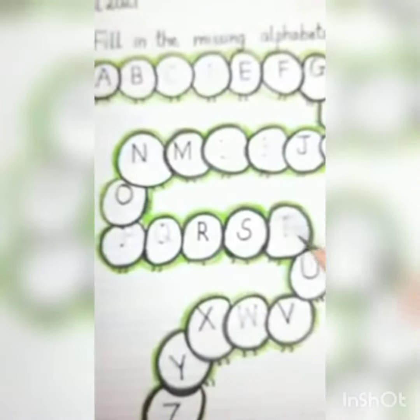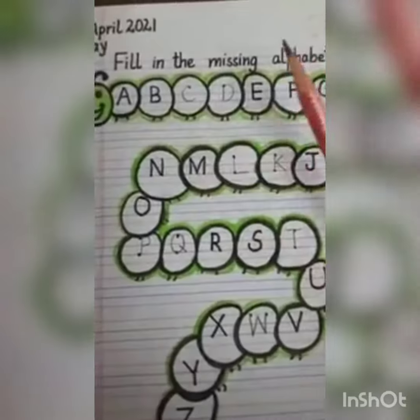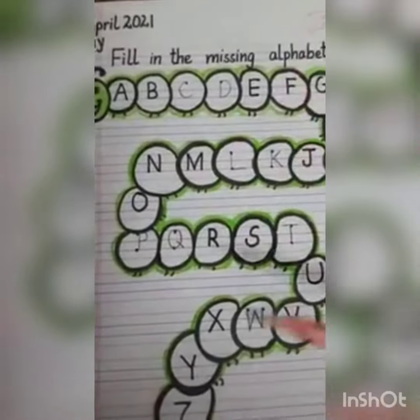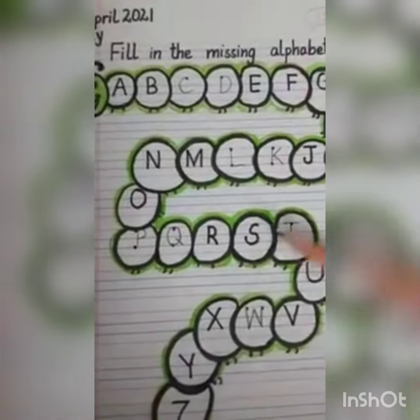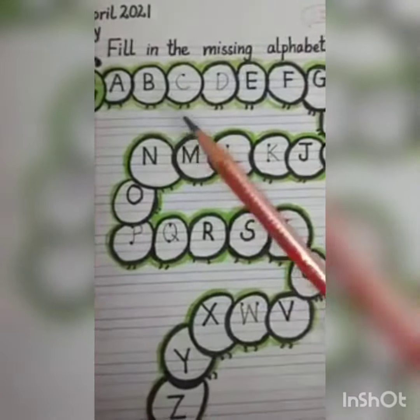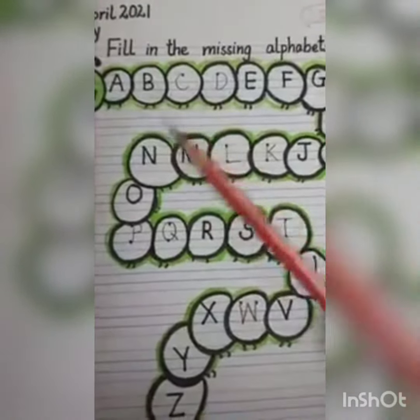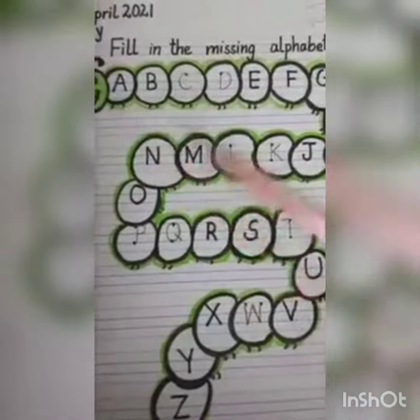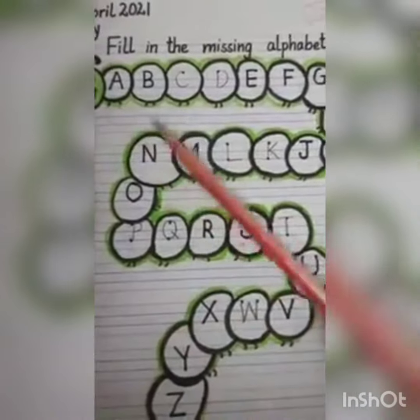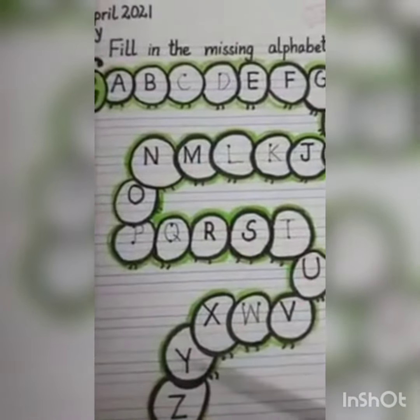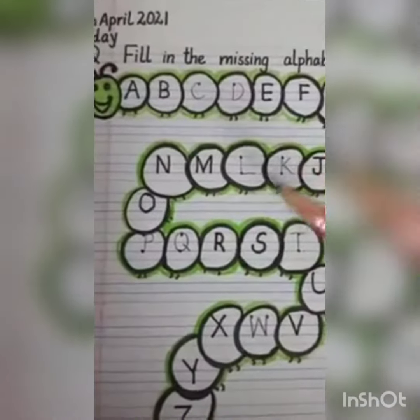So children, in this way you have to fill the missing letters, and after that you have to read all these letters — okay? From A to Z you have to read all the letters. Thank you, children.